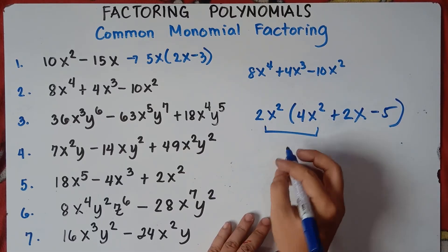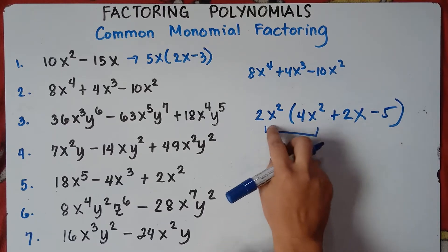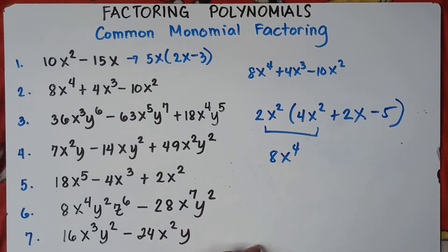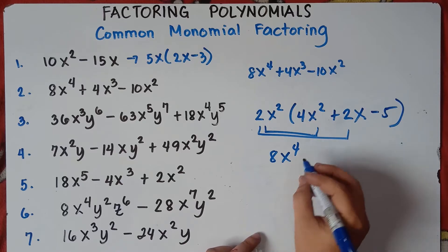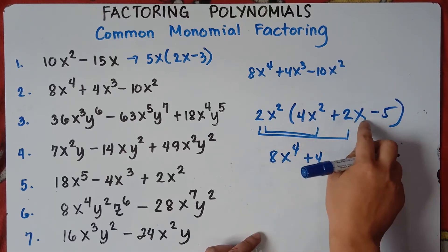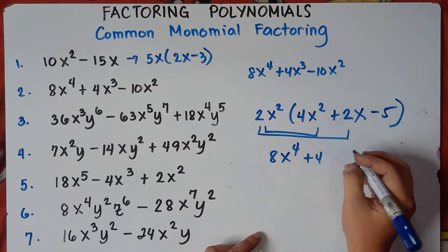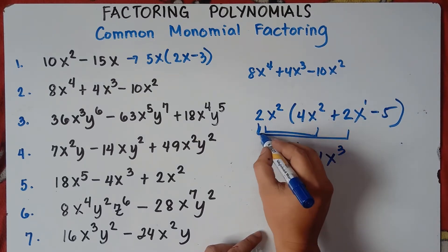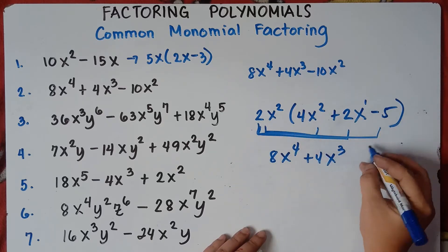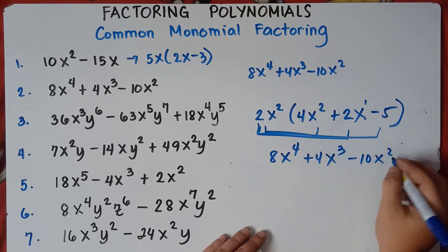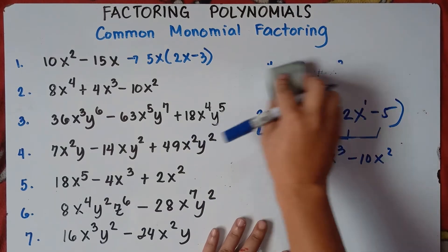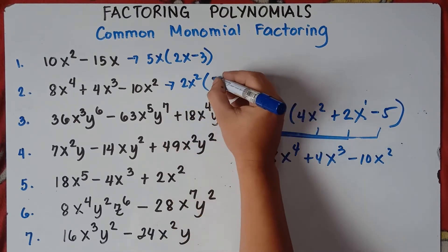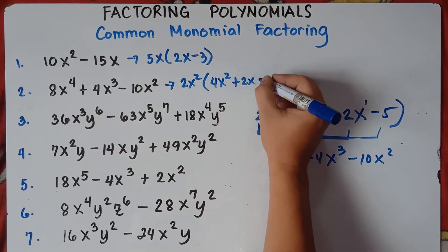For the last term: negative 10 divided by 2 is negative 5, and x squared divided by x squared cancels to 1. So the answer is negative 5. If you distribute 2x squared times 4x squared, you get 8x to the power of 4. 2x squared times 2x gives 4x cubed. And 2x squared times negative 5 gives negative 10x squared — the same original expression. So the answer for number 2 is 2x²(4x² + 2x − 5).